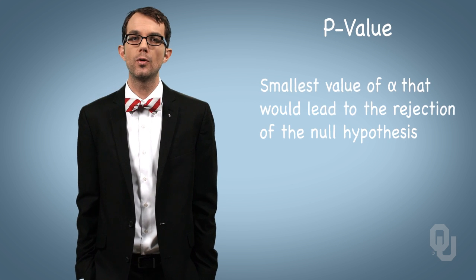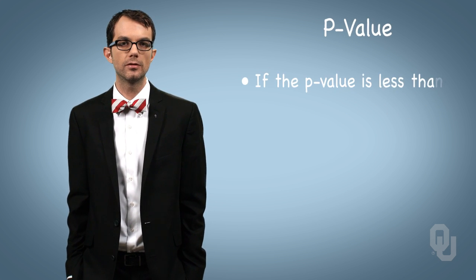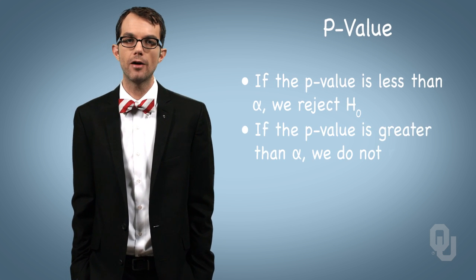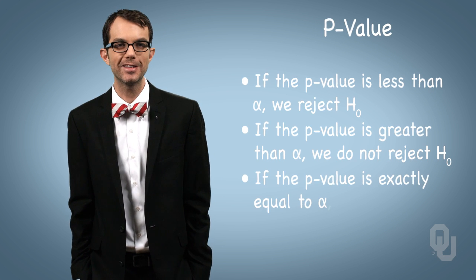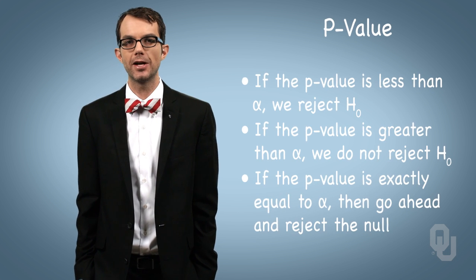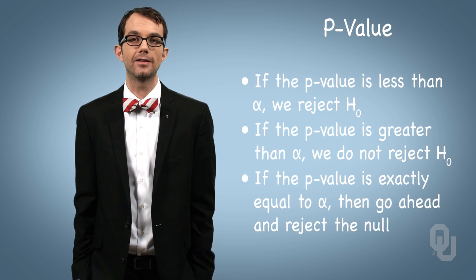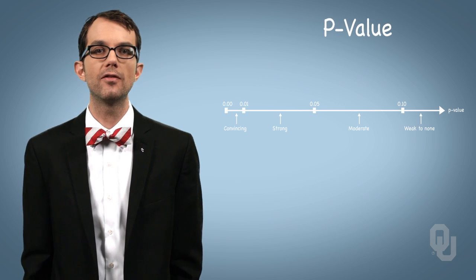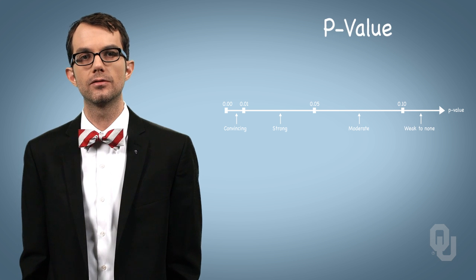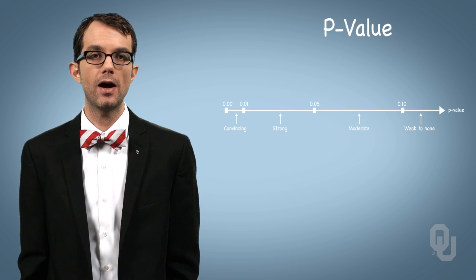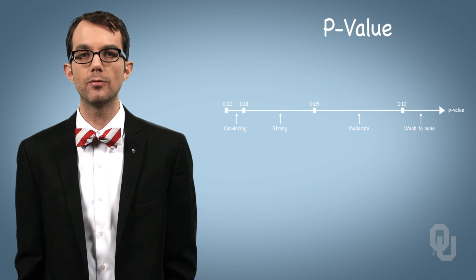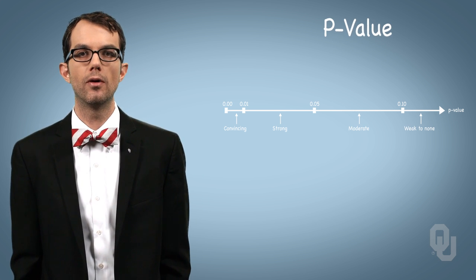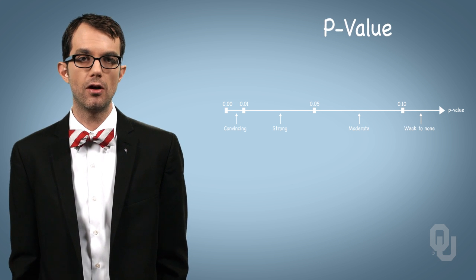With the last step, we make a decision. If the p-value is less than alpha, we reject H-naught. If the p-value is greater than alpha, we do not reject H-naught. If the p-value is exactly equal to alpha, go ahead and reject the null, though that's not likely to happen. If the p-value is smaller than 0.01, that's a convincing amount of evidence to reject the null hypothesis. Between 0.01 and 0.05 is strong evidence. Between 0.05 and 0.1 is moderate evidence. And a p-value greater than 0.1 is weak or no evidence at all for rejecting the null.